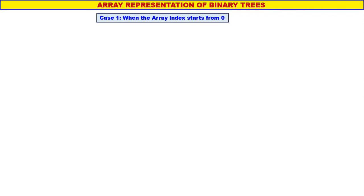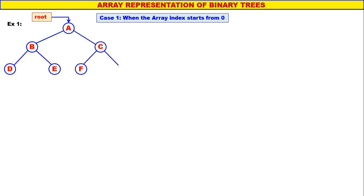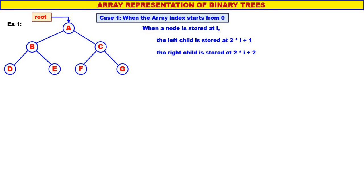Now let us consider array representation of binary trees. First we shall take case one, when the array index starts from zero. The logic for case one is: when a node is stored at index i, the left child is stored at 2*i + 1, and the right child is stored at 2*i + 2.